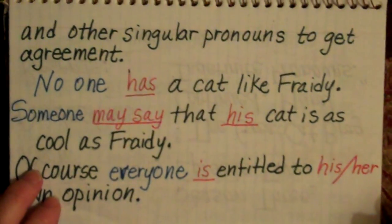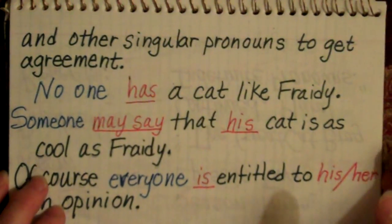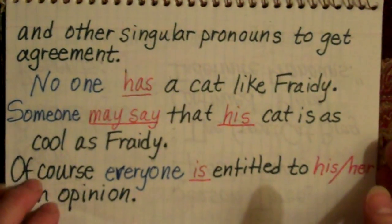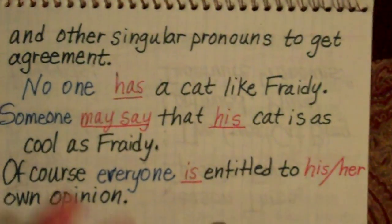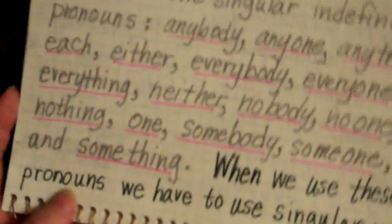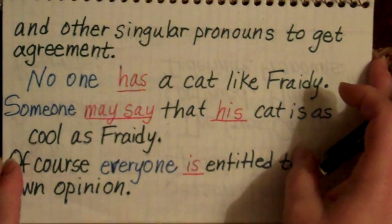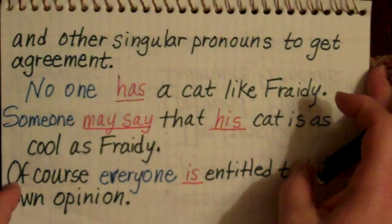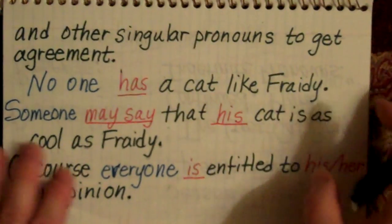You know that you have to have agreement between your pronouns and your antecedents to make sense. And agreement means that they're equal in gender and in number, if you'll remember. So, to get agreement with these right here, you have to use singular verbs and you have to use singular pronouns to refer back to them.